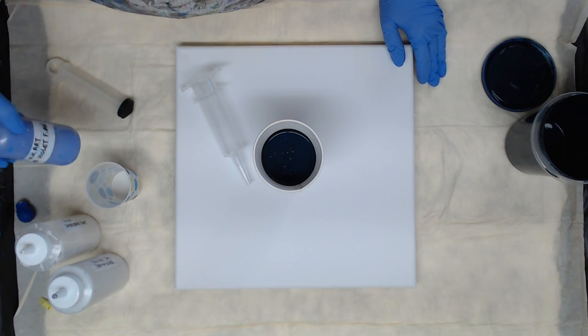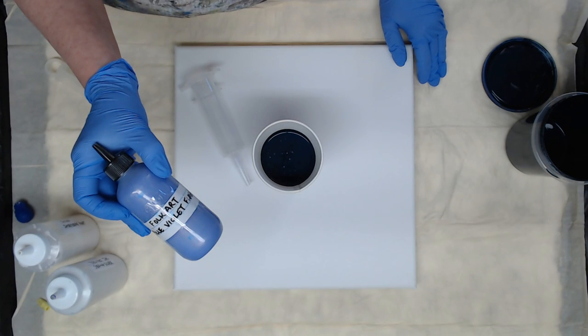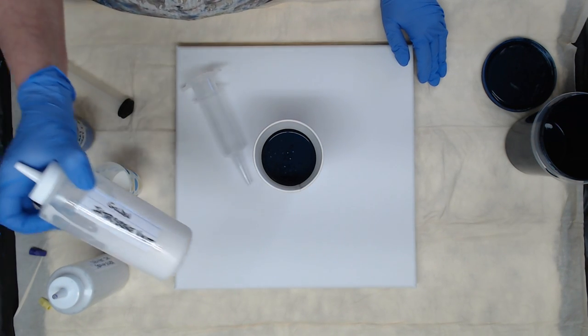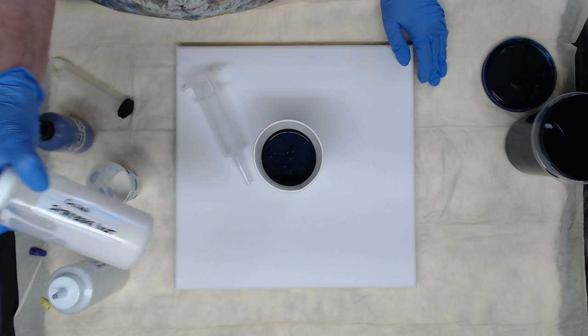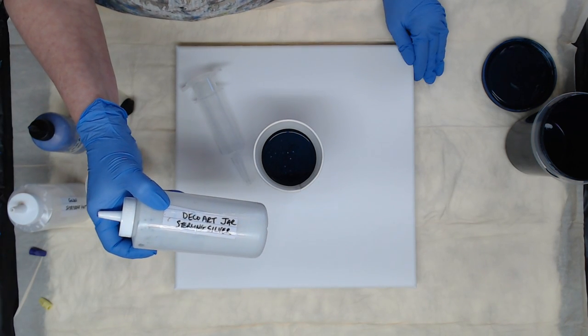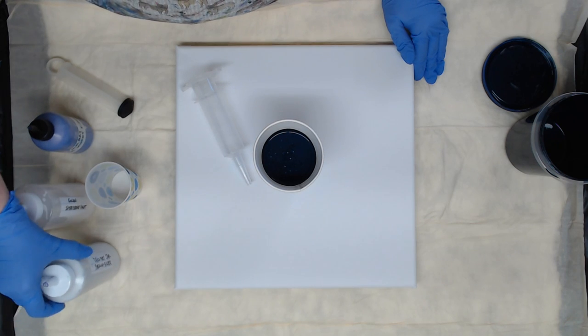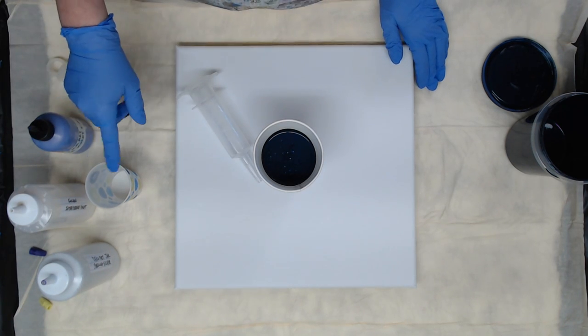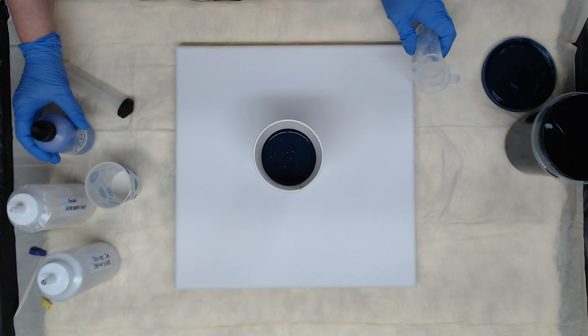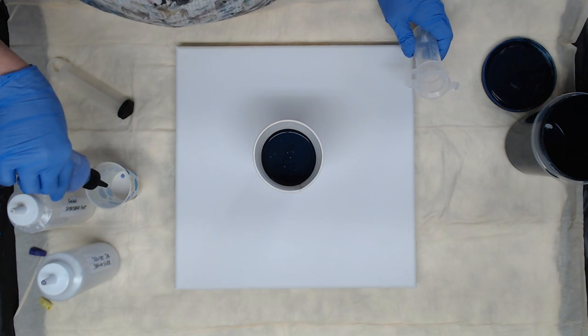The reactive colors will be folk art blue violet flash color shift, golden interference violet, and Deco Art sterling silver. This is the one that comes in the jar. So I'm gonna make a little dirty cup and pour it into the syringe. I think I'll start with the purple flash.